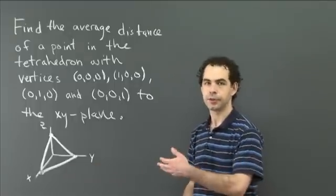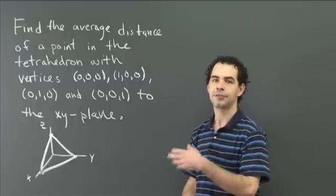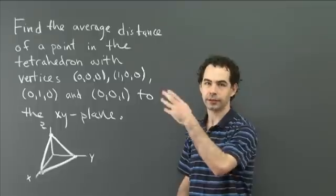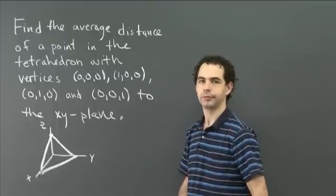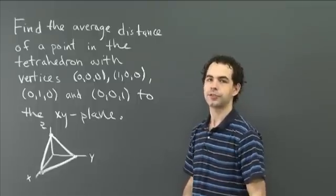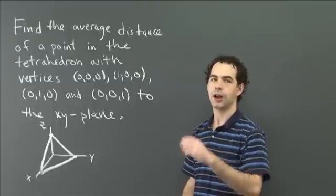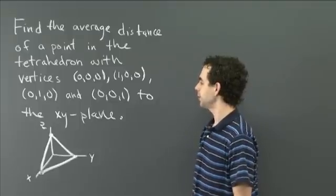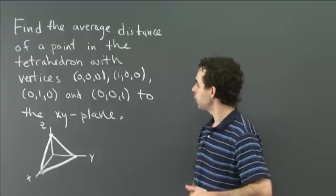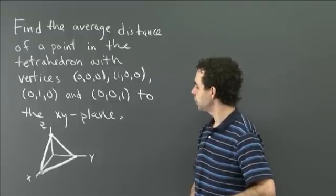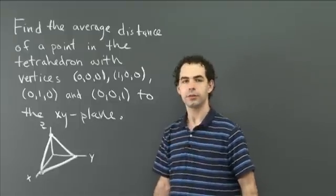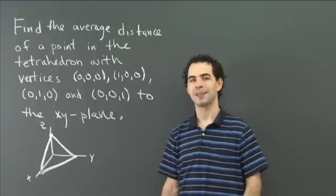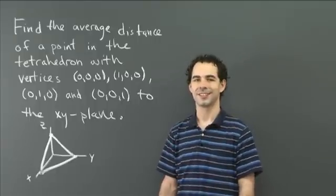What I'd like you to do is find the average distance of the points in that tetrahedron from the xy plane. So compute the average value of the distance, as the point ranges over the whole tetrahedron, of its distance from the xy plane. Why don't you pause the video, spend some time working that out, come back, and we can work it out together.